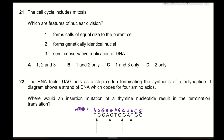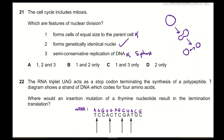Question 21: Which are features of nuclear division in mitosis? Statement 1 — forms cells of equal size to the parent cell — incorrect; division forms smaller cells and organelles are not shared equally. Statement 2 — forms genetically identical nuclei — correct; mitosis must produce genetically identical nuclei. Statement 3 — semi-conservative replication of DNA — incorrect; this occurs in the S phase, not during mitosis. Therefore the correct answer is D.